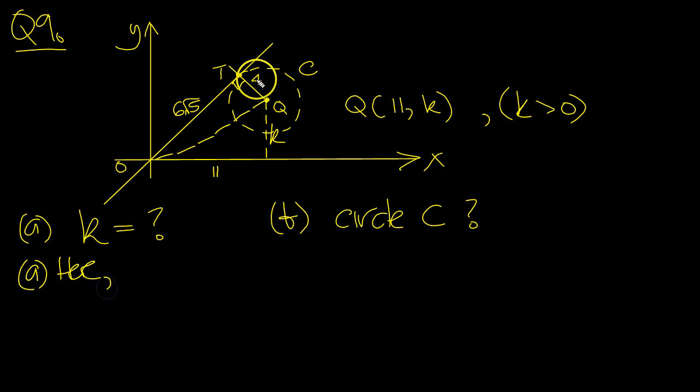here. We've got a right-angle triangle, so 4 squared, plus 6 root 5 squared, must equal this length, which is 11 squared, plus k squared. There we are, 16. 36 times 5 is 180.